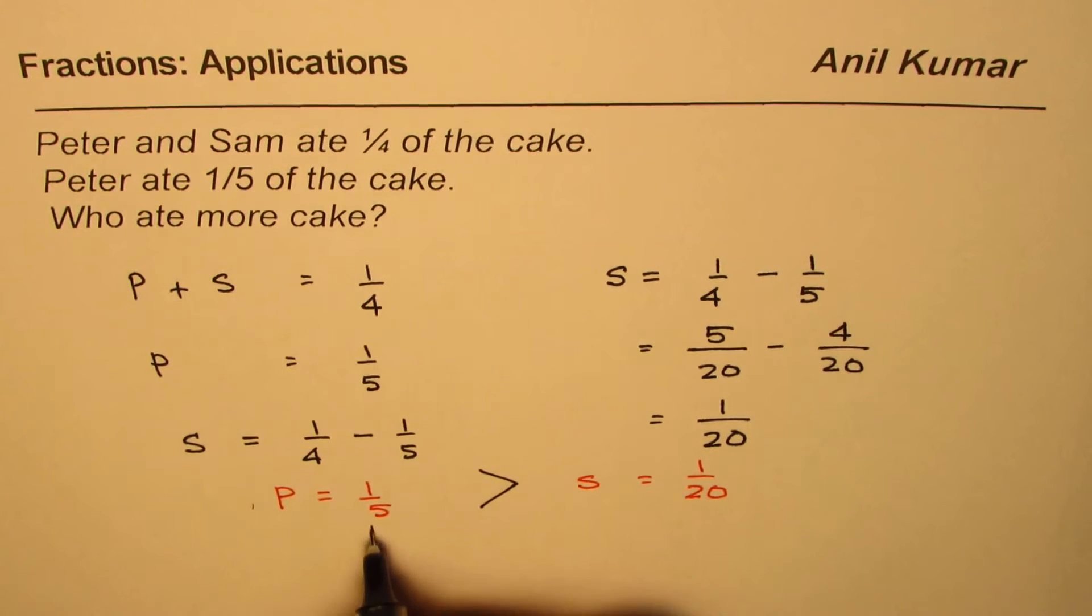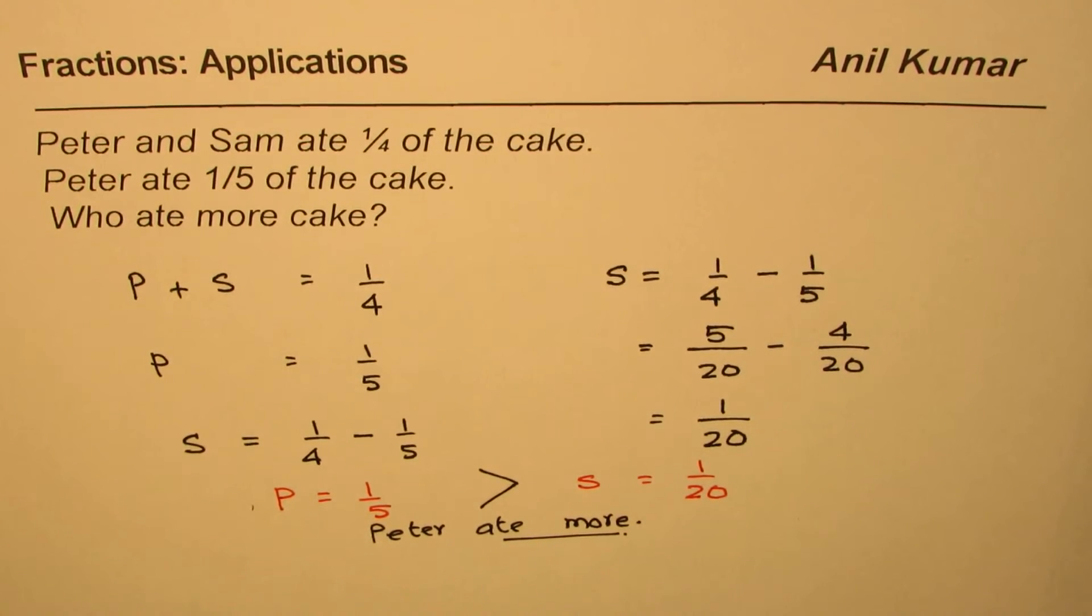That's the answer. So, we can say, Peter ate more. Now, what you can do is, you can find how much more. That is to say, 1 over 5 minus 1 over 20 is how much. So, that difference is what Peter ate more.